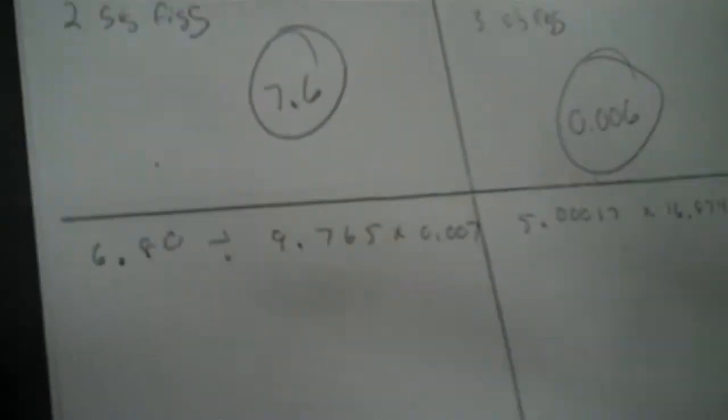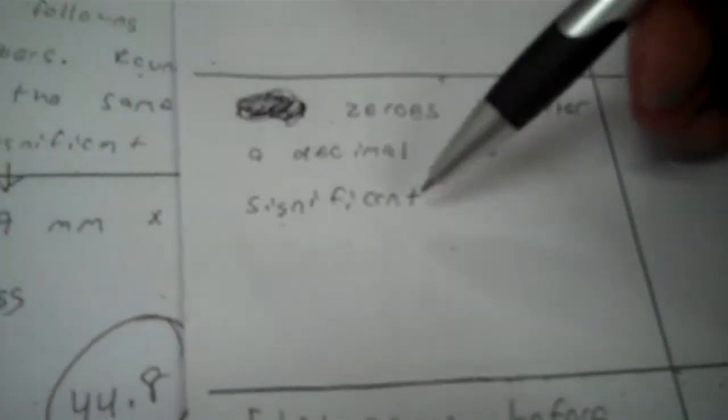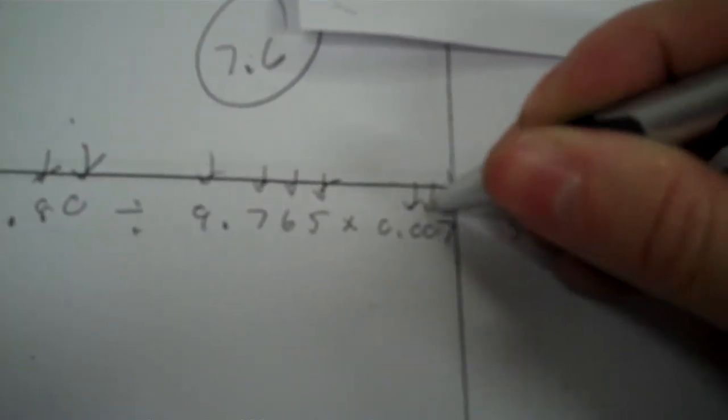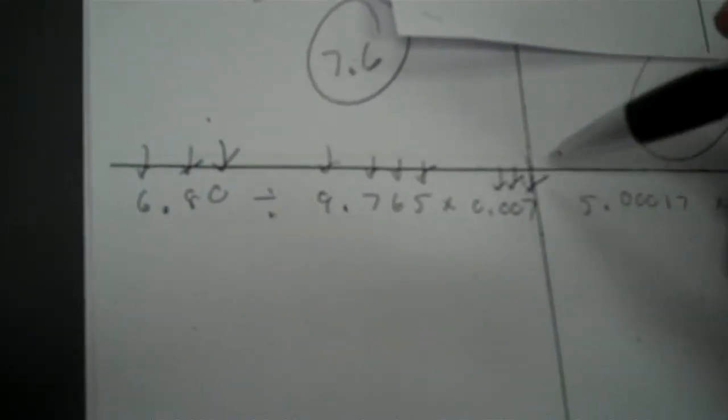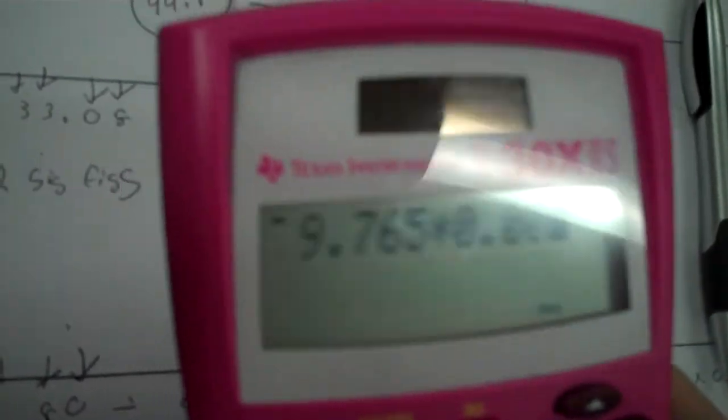Okay, the next problem. It's got two, now you got three numbers — that's got four, it's got one. Let's decide which zeros are betweeners — zeros between non-zero digits are significant, I don't have any between zeros. Zeros after a decimal are significant — so that is significant, and those are significant. Final zeros before a decimal are not significant. So the least accurate number — it's a tie for three — so after I calculate that, I'm going to round it to three sig figs. So 6.80 divided by 9.765 times 0.007.